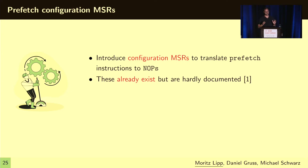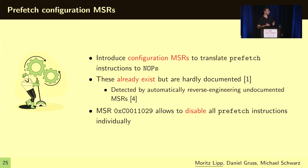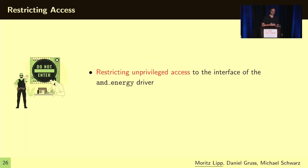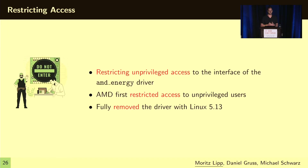In concurrent work, we also automatically reverse engineered those MSRs. Using this MSR, you can disable the prefetch functionality for all the different prefetch instructions that exist. To tackle the power side channel, you can restrict unprivileged access to that interface, which is what AMD actually did. Furthermore, in a more recent Linux kernel, the driver was fully removed in response to this paper and also the Platypus paper, since there is apparently no need for unprivileged access to that interface.